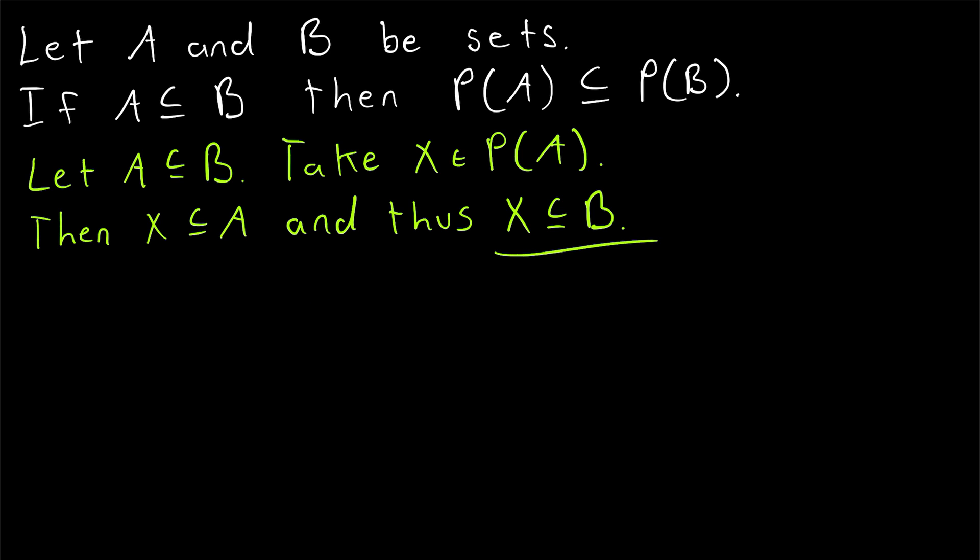And then this is basically the end. Since X is a subset of B, we know, I'll write these three dots for therefore, therefore X is an element of the power set of B.